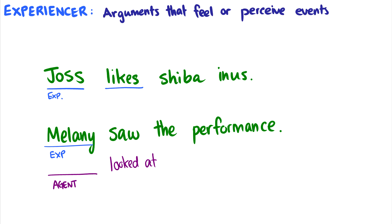Another example would be like, Melanie heard the performance. In which case, heard takes an experiencer. Because you don't have to be actively listening in order to hear something. Okay, that's the difference between agent and experiencer.